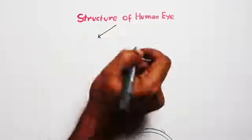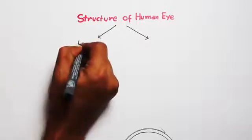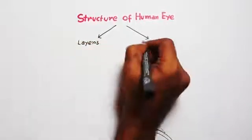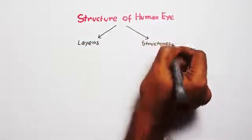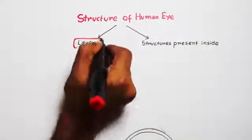For better understanding, we can divide it into two parts: one is what are the walls or layers of the eyeballs, and what are the structures present inside. So let's discuss the layers first.